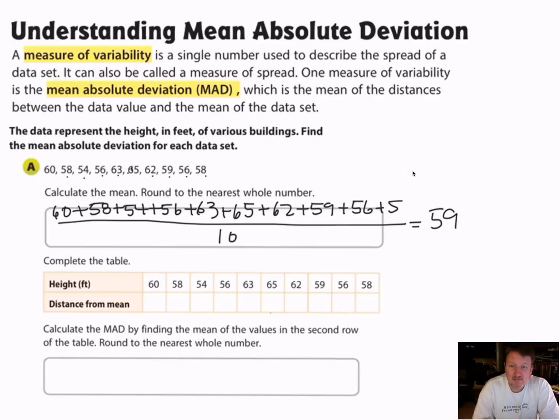So that's the mean of the data. So the next thing I want to do is come down here and use my mean, use my average, and find out how far each one of these numbers is from that mean. For example, 60. How far is 60 from 59? Well, it's just one away.